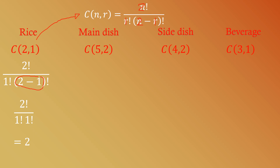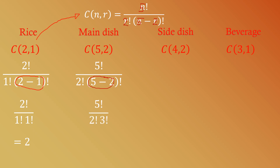For the main dish, C(5,2): n equals 5, r equals 2. So we have 5! over 2! times (5−2)! = 5! over 2! times 3!. Computing this gives us 10.